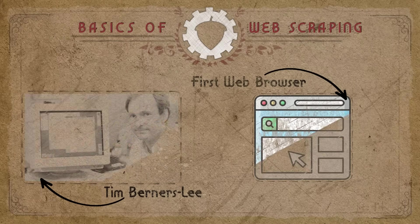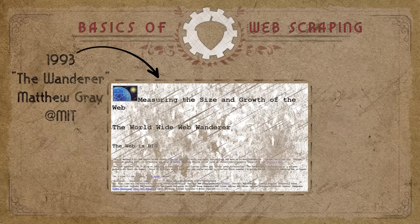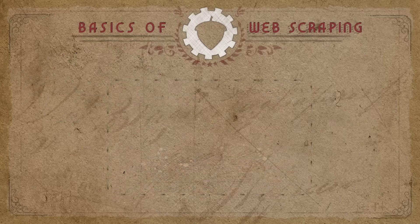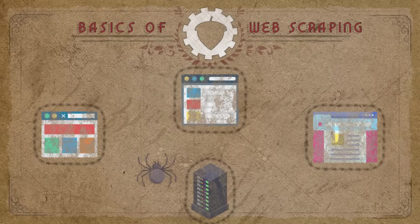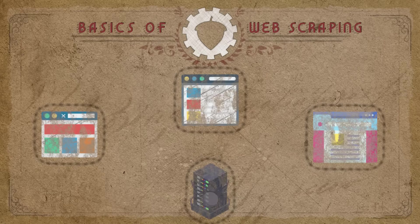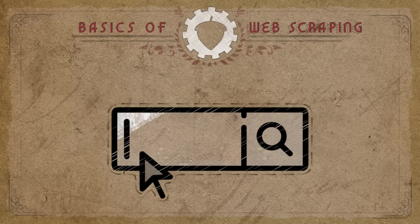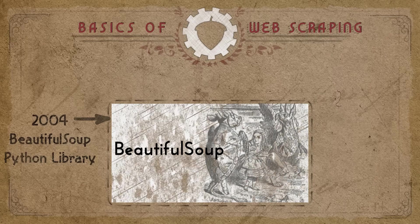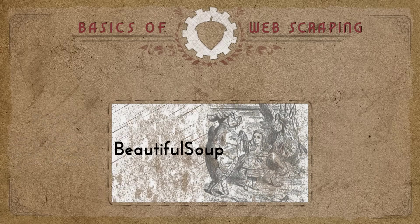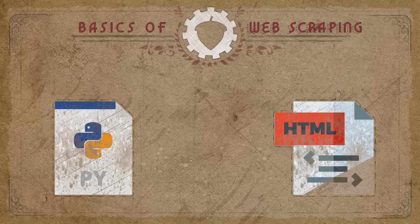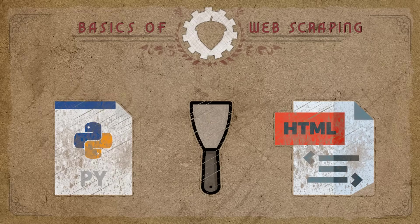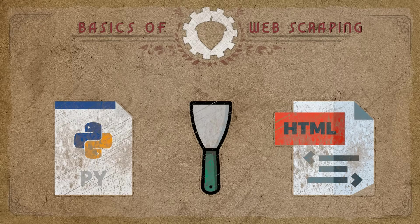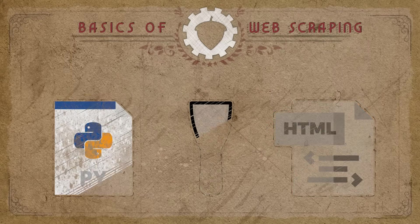A couple years later, in 1993, the Wanderer program was created by Matthew Gray at MIT. The Wanderer would automatically index the web and gather information about each web page using the page's HTML metadata. Nowadays this is known as crawling, and it's how search engines find websites. Crawling is the predecessor for scraping, but it wasn't until a decade later in 2004 that a Python library called Beautiful Soup appeared — an HTML parsing library that allowed Python to filter and gather any information from any web page. Basically, scraping. So thanks to Beautiful Soup, web scraping as we know it was born.